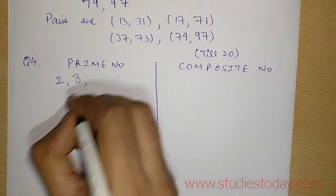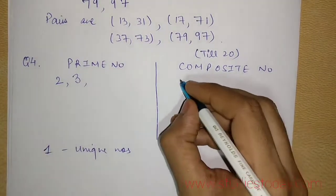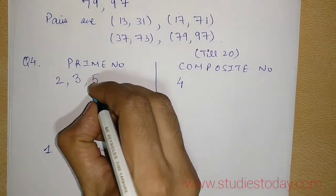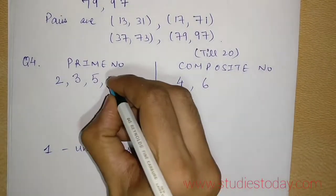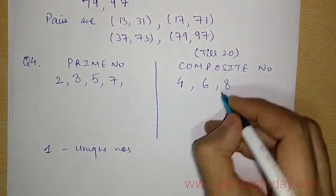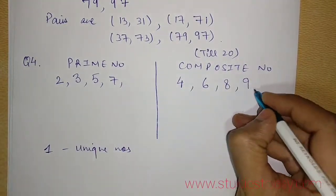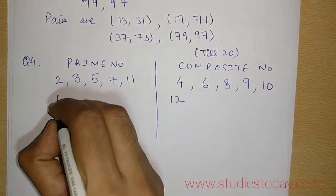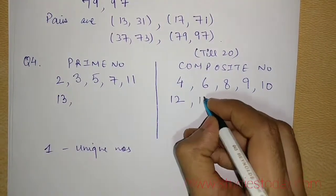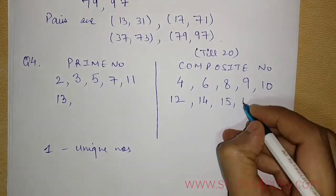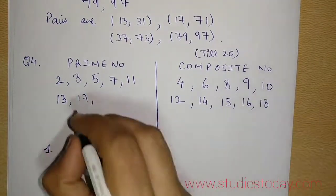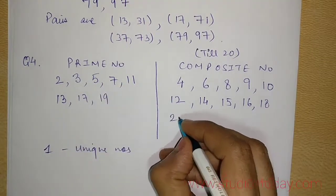Then write 3, 4, 4 is a composite number. So shift to the next table. 5, then 6, then 7, then 8, then 9, 10, 11, 12, 13, 14, 15, 16, 17, 18, 19 and 20.